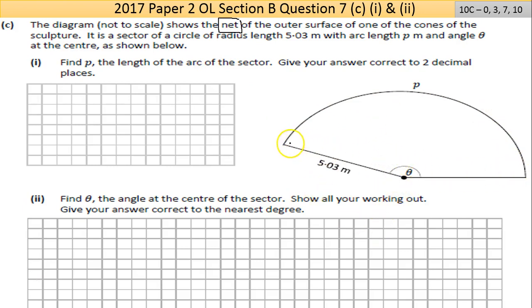You imagine that closed up would be a cone—it's as if you peeled it off and stuck it flat. If you look at it, it's part of a circle going around there. You're asked to find the sector arc length p, which equals the circumference of the base of the cone.